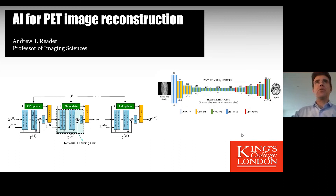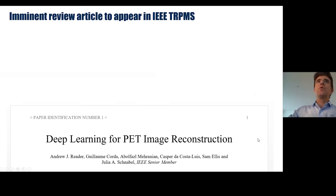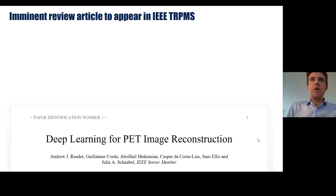The title is 'AI for PET Image Reconstruction' and I'll be giving an overview of how we introduce artificial intelligence — also known as machine learning or deep learning depending on which part we're talking about — and how we include that in image reconstruction for PET. I'm about to publish a review article on this very topic, and a lot of what I'm talking about today draws upon that. I'd like to upfront acknowledge my co-authors: Guillaume Corder, Aberfaz Morinian, Caspar de Costa-Lewis, Sam Ellis, and Julia Schnabel.